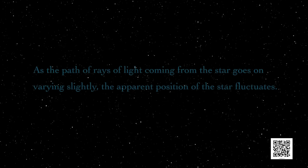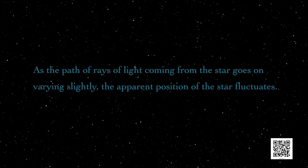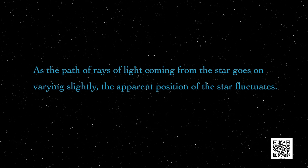Since the stars are very distant, they approximate point-sized sources of light. As the path of rays of light coming from the star goes on varying slightly, the apparent position of the star also fluctuates. The amount of starlight entering the eye flickers, so the star sometimes appears bright and other times faint — which is why we see the twinkling effect.